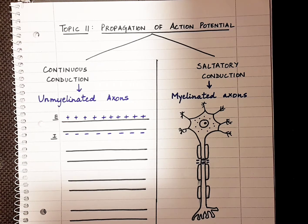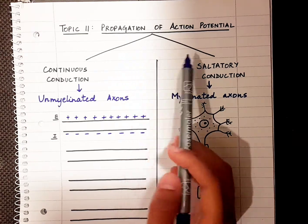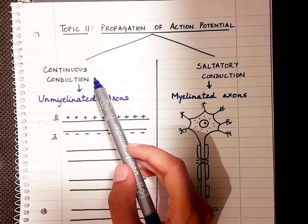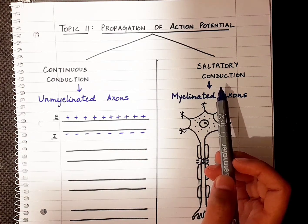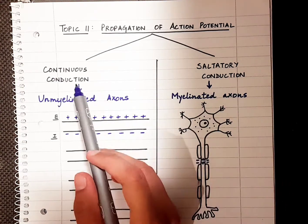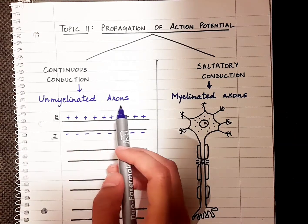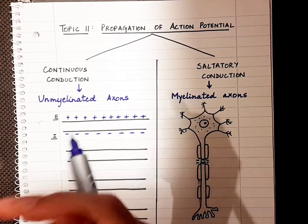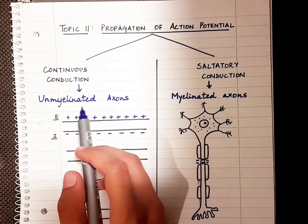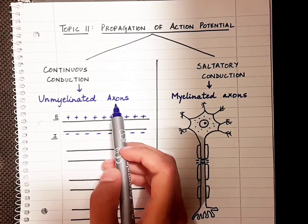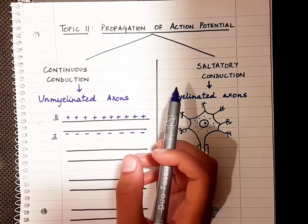Today we will learn the two types of propagation of action potential. There are basically two types: continuous conduction and saltatory conduction. Continuous conduction is the one which occurs in unmyelinated axons — axons which do not have a myelin sheath — and they have a continuous conduction of action potential.